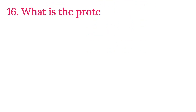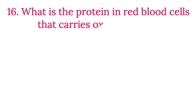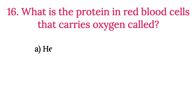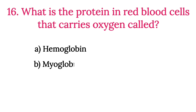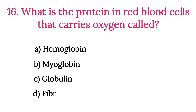MCQ Number 16: What is the protein in blood that carries oxygen called? Option A: Hemoglobin. Option B: Myoglobin. Option C: Globulin. Option D: Fibrinogen. The correct option is Option A, Hemoglobin.